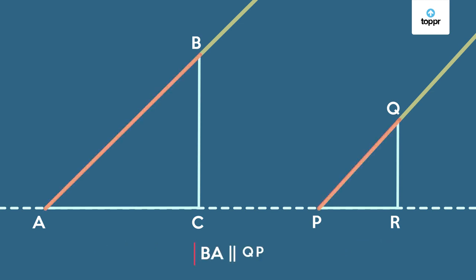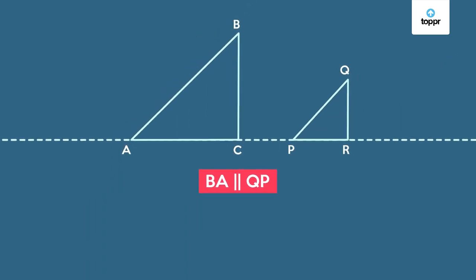So BA and QP lie on two parallel rays. Now using this information, we can say that angles A and P are the same, and also we know that angle C and R are the same as they both are 90 degrees.